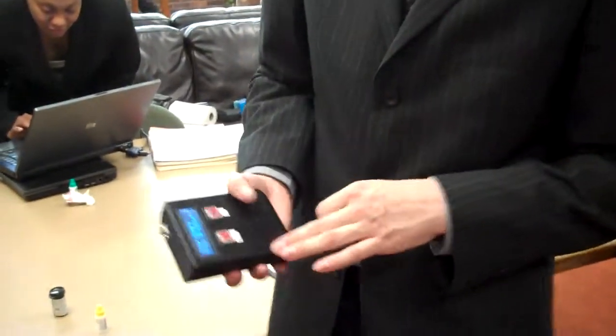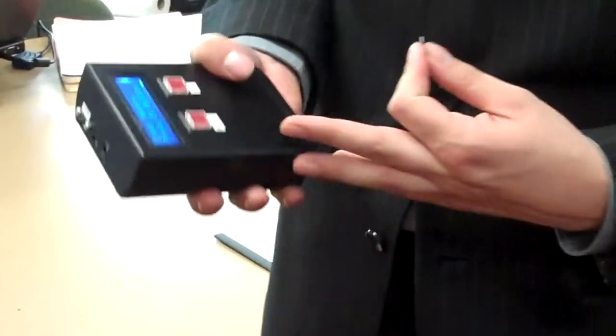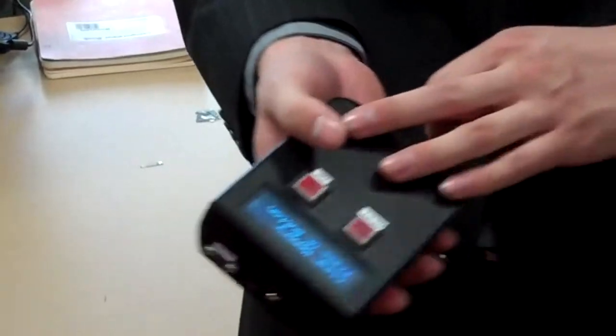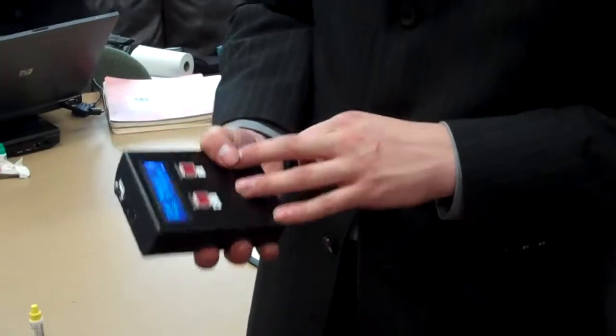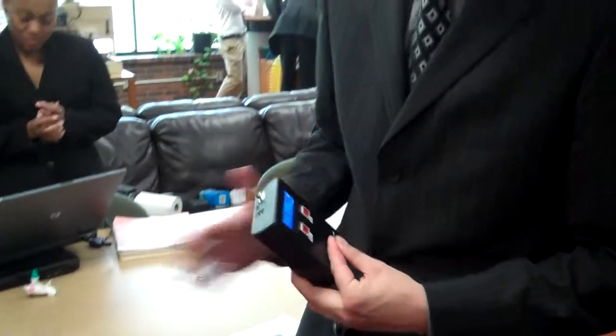We took the circuitry for a glucose meter, built it from the ground up, and made it so we could have memory. It'll store your readings for up to three months and wirelessly transmit into a computer program where you can have data management. You can look at graphs, trends, highs and lows.